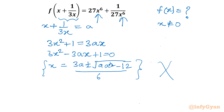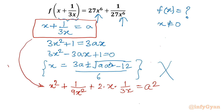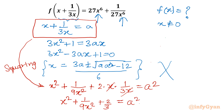Which method will we follow? Let us consider the same equation and apply some manipulation. I will take the square of this equation: (x + 1/3x)² = a², which expands to x² + 1/9x² + 2·x·(1/3x) = a². The cross term simplifies, and what is left is x² + 1/9x² + 2/3 = a².